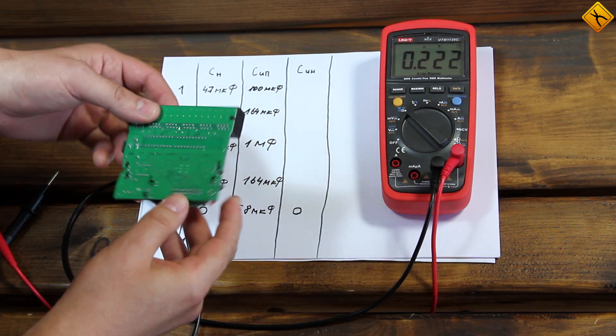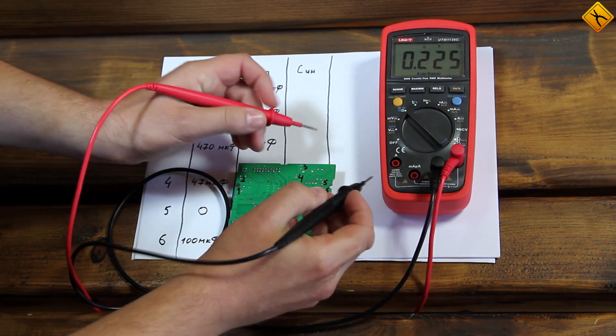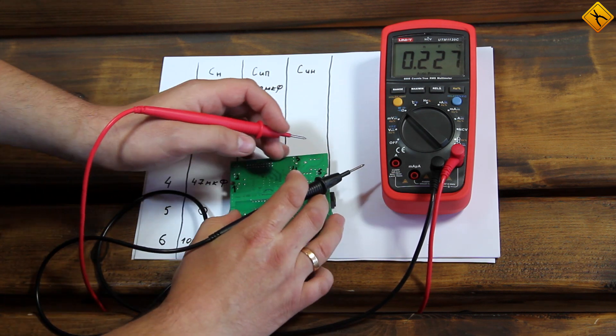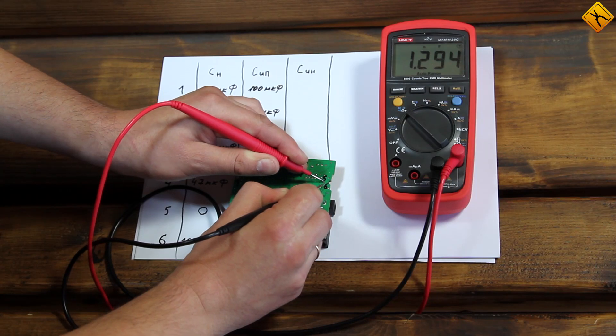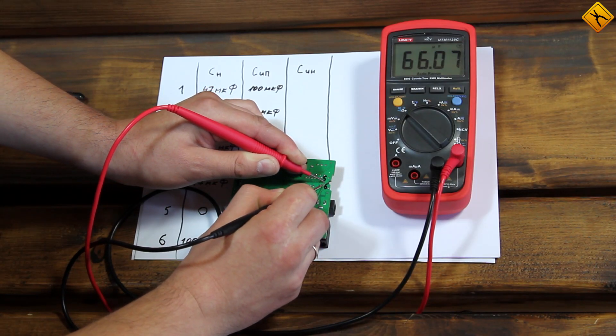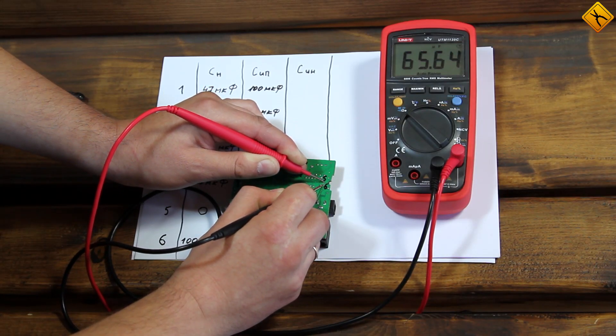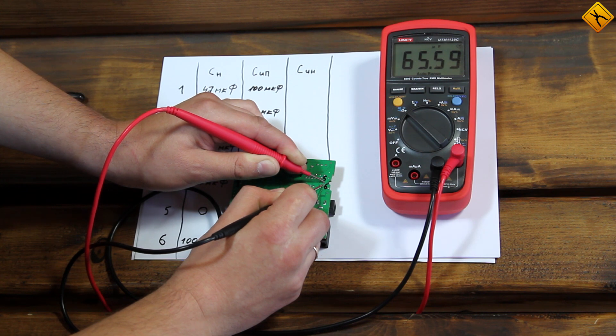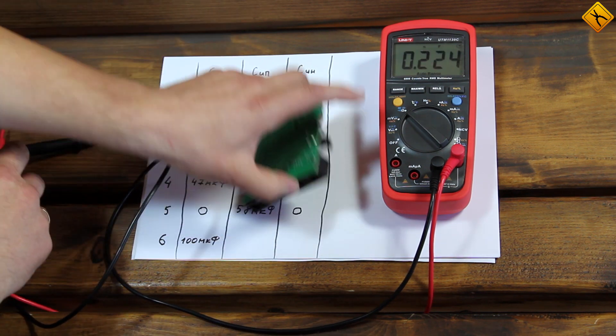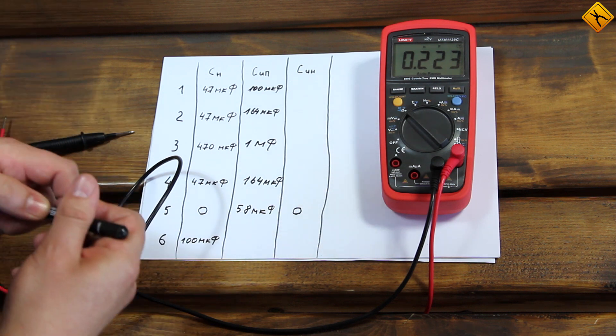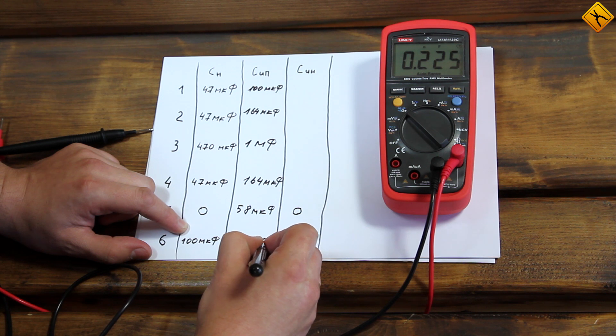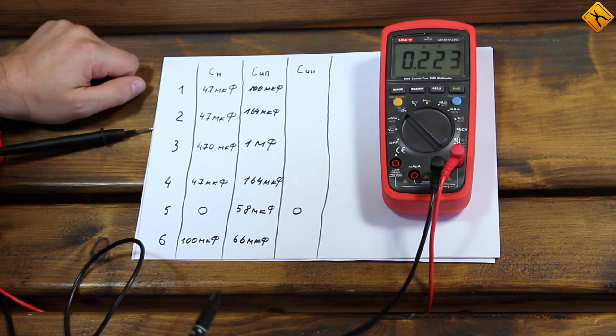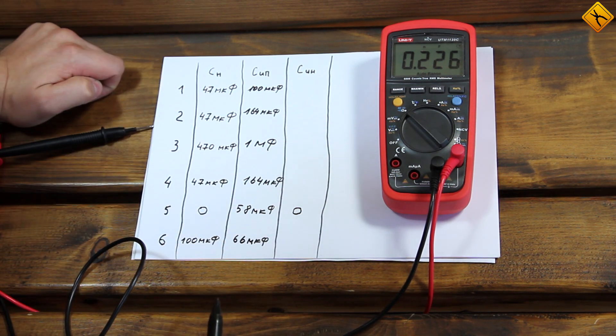Lastly, point six. We should have 100 microfarads. Let's see what we get. This is the most accurate measurement so far, with a 35% error.